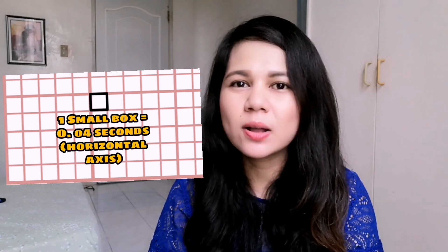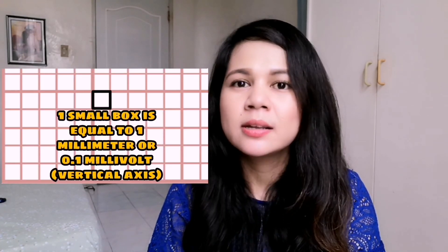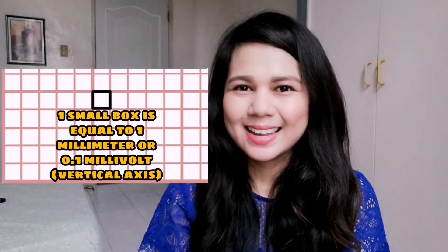Now, we have a small box and a small box is equal to 0.04 seconds in a horizontal axis whereas a small box is equal to 1 millimeter or 0.1 millivolts if we talk about the vertical axis.